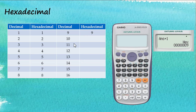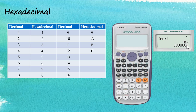For 10, hexadecimal is written as A. So we use A to represent 10 in the hexadecimal system. Then 11 is B, 12 is C, 13 is D, 14 is E, and 15 is F. For 16, it is written as 10 in hexadecimal.